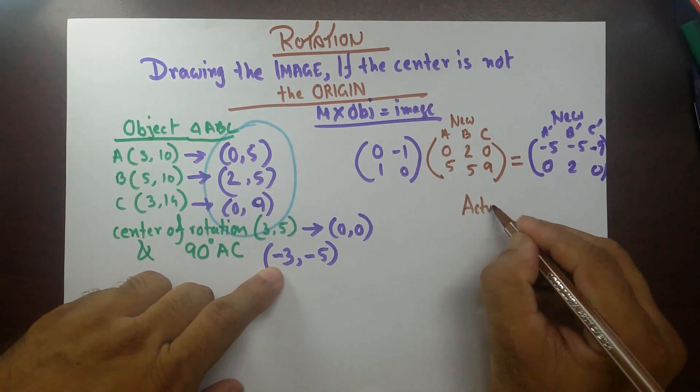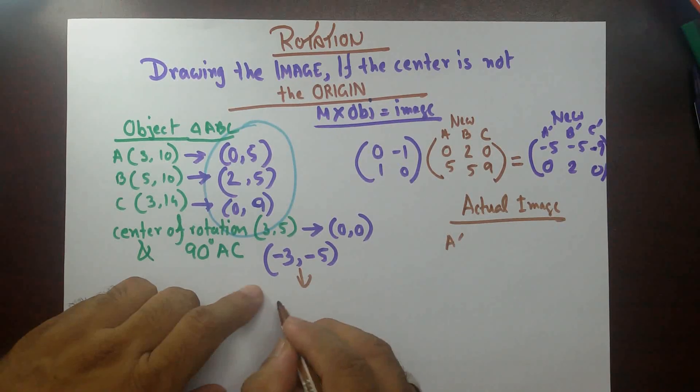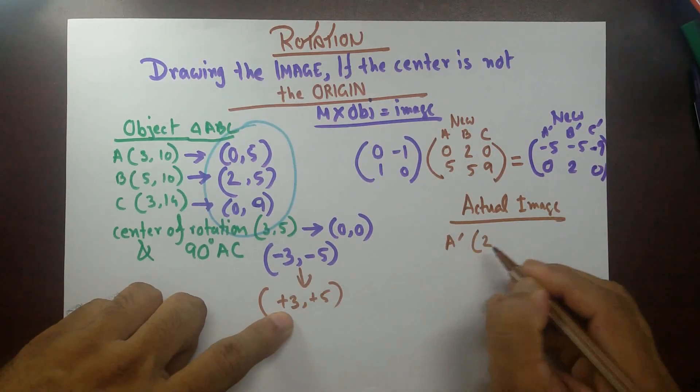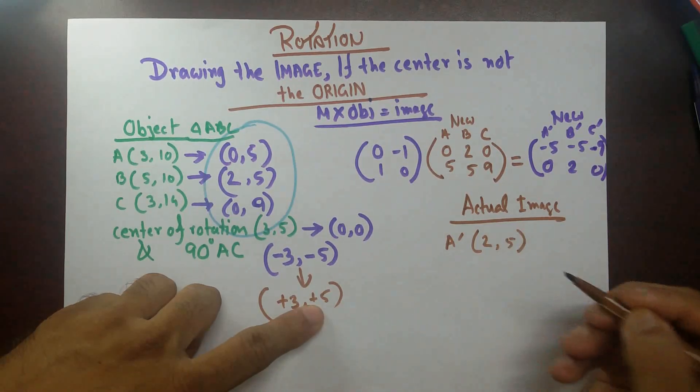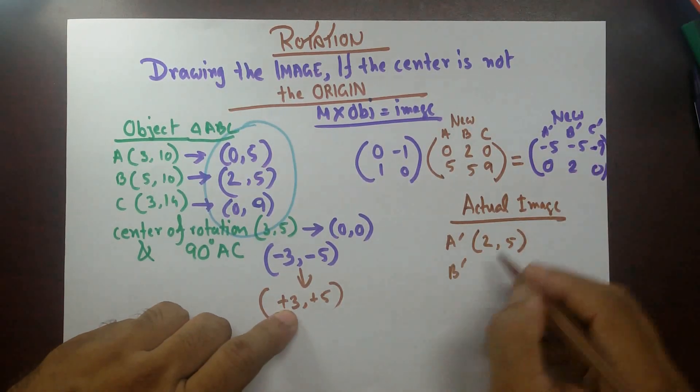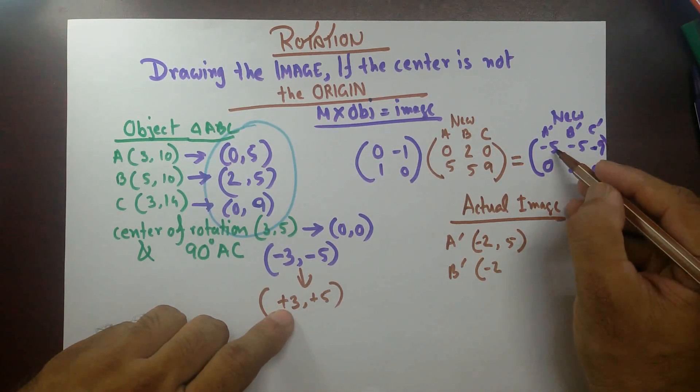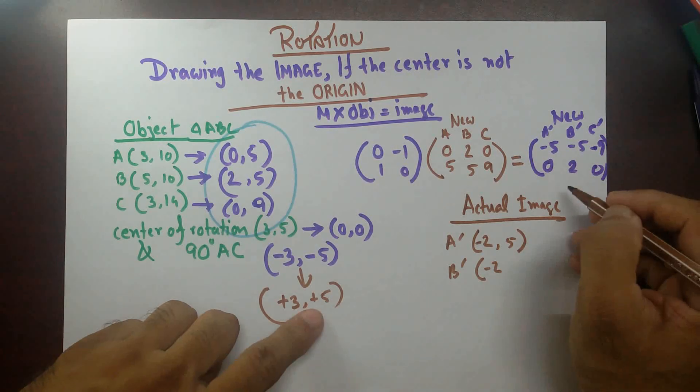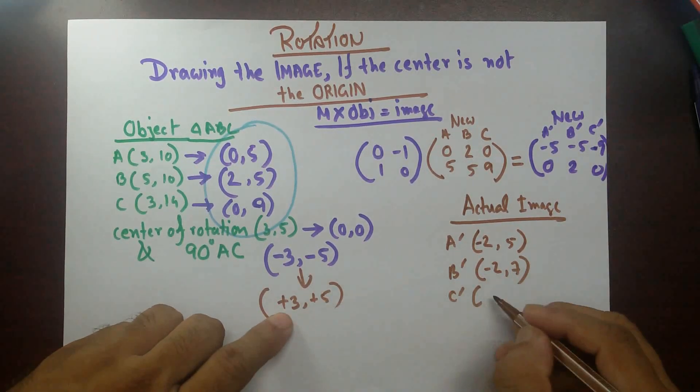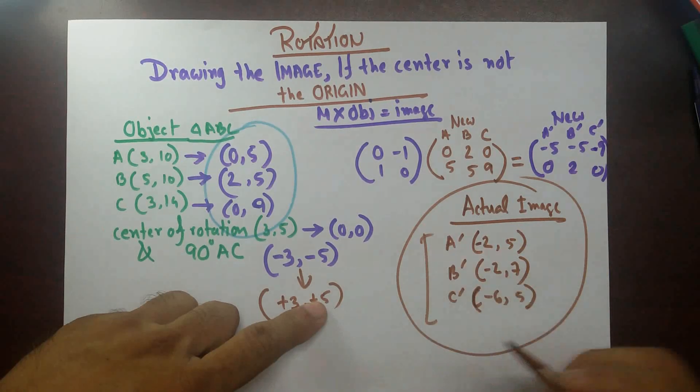So actual image, coordinates of actual image would be A prime. See, minus 3, we are going to putting this back, plus 3, plus 5. So minus 5 plus 3, that's going to be 2. And 0 plus 5 is going to be 5. And then with this one, B prime would be minus 5 plus 3, that's going to be minus 5 plus 3 minus 2. Oh, this is going to be minus 2 as well. See that? Minus 2 plus 5, this is minus 2. Then 2 and 5 is 7. Then C prime would be minus 9 plus 3 minus 6. And 0 plus 5 is 5.